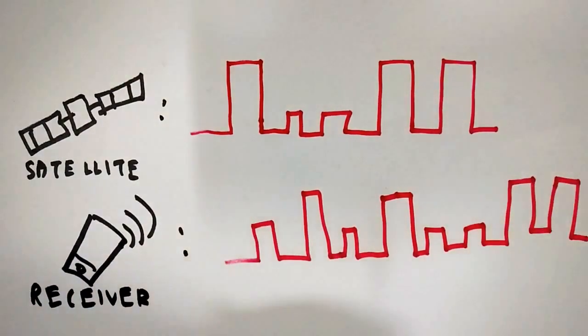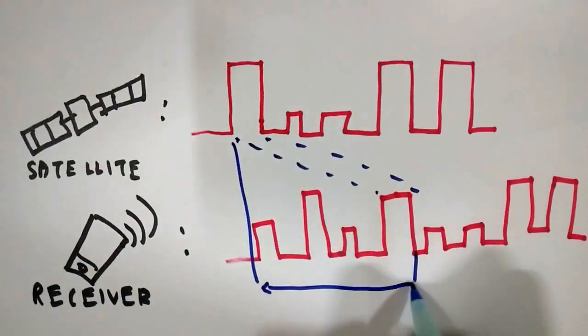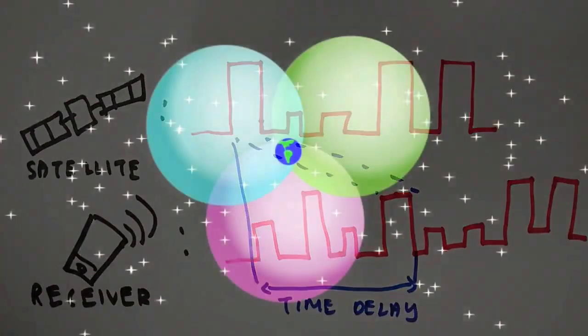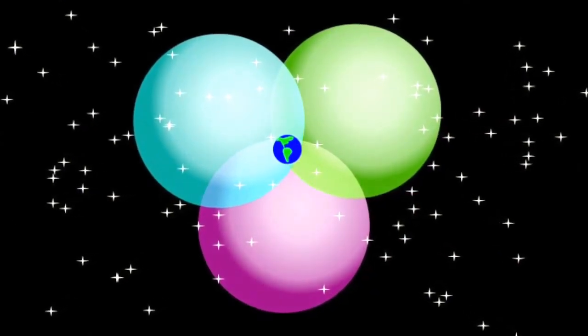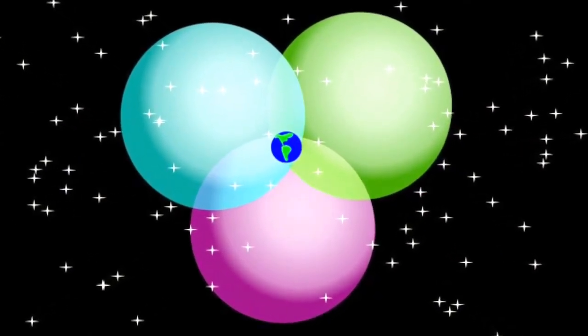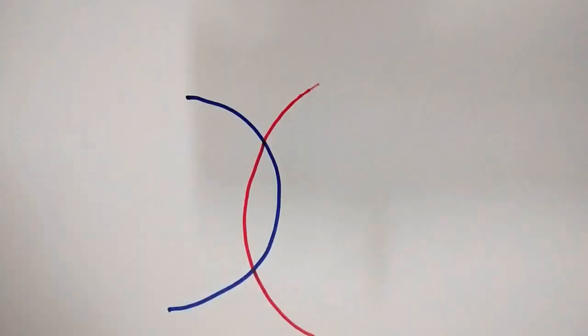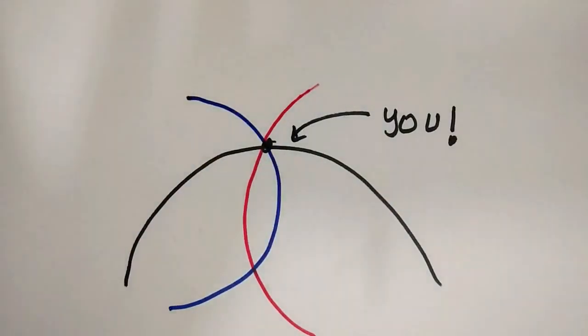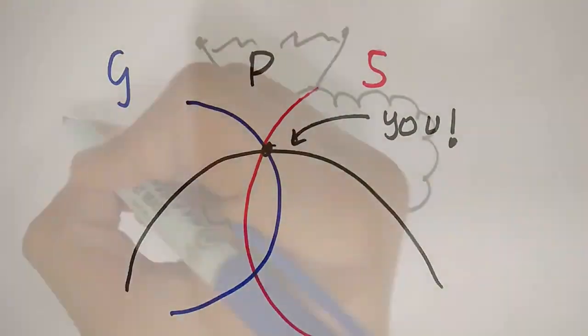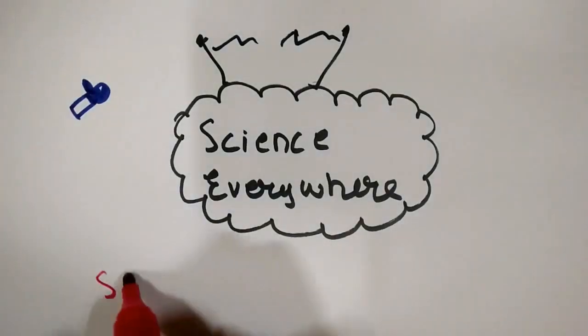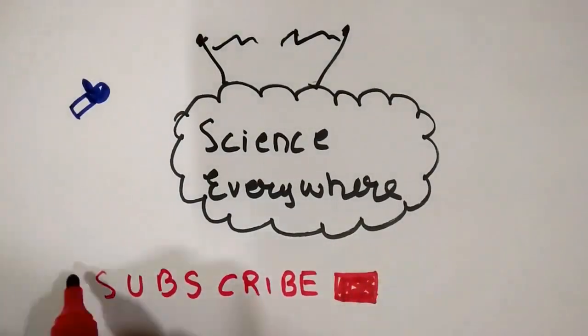To sum it up, the time delay of the pseudo-random code determines your distance from each of the satellites, the imaginary spheres with radius equal to your distance from the satellite intersect and there you have it, your position in three-dimensional space. And that people was how GPS works. If you learned something new then give this video a like and subscribe for some more awesome science.